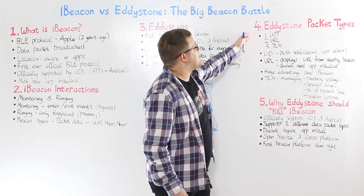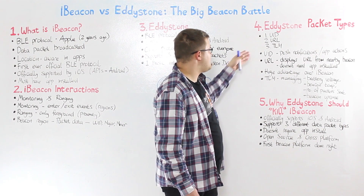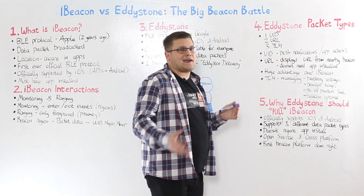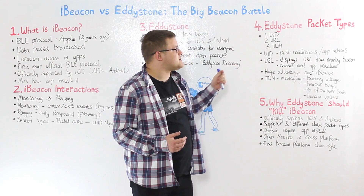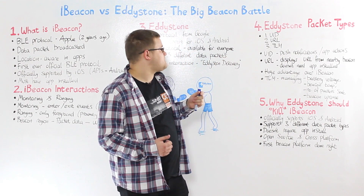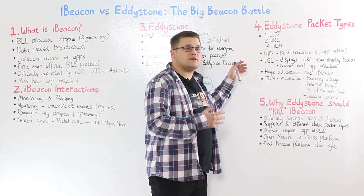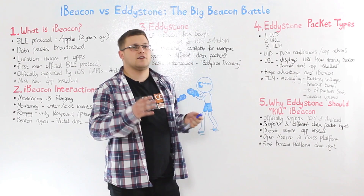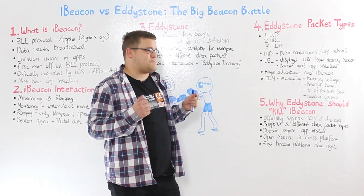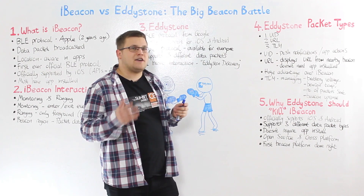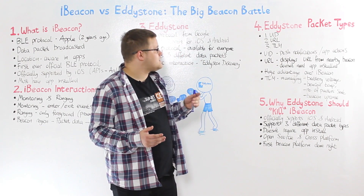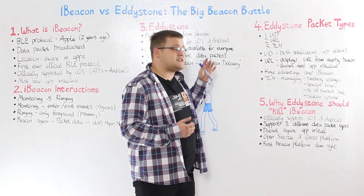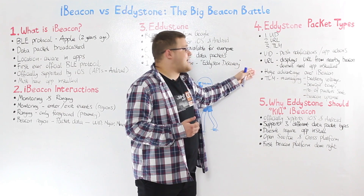Let's talk about the Eddystone packet types. The first type is Eddystone UID. Whenever the user gets this packet, we can trigger a push notification or an app action. The second one is Eddystone URL. This allows the beacon to send a URL. Whenever the user gets this packet, we can display a URL on their phone. The user does not need to install your app to get this packet. This gives Eddystone a huge advantage over iBeacon.